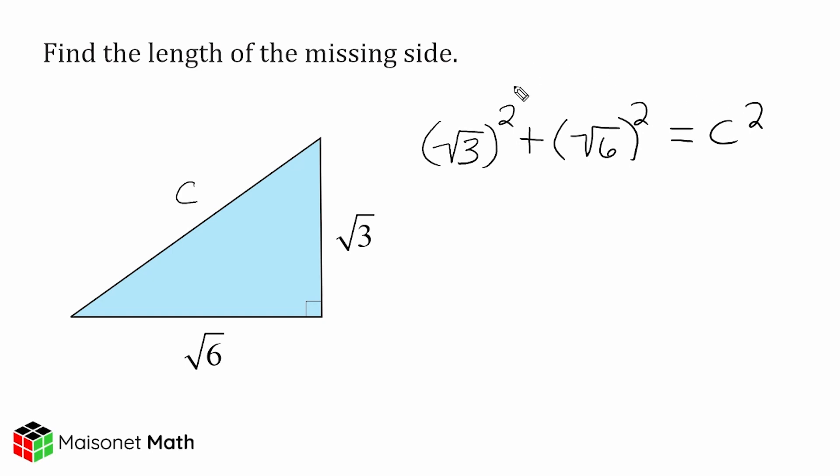Now, whenever you are squaring the square root of something, the exponent of 2 and the square root symbol, the radical, just cancel each other out. So the square root of 3 squared is just 3, and the same thing is true right here. We can cancel out this square root symbol and the exponent of 2, giving us just 6, and set that equal to C squared.